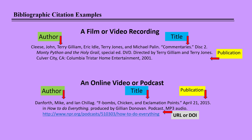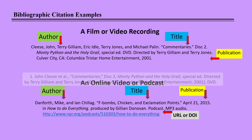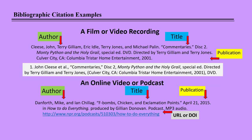You can list more authors in the bibliographic citation than in the footnote citation, so the rules are a little different. In the footnote citation, because there were more than three authors, the abbreviation et al. was used. In the bibliographic citation, you are allowed to list up to seven authors before using et al. Also notice that the DVD — or type of media — has moved from the end of the footnote citation to after the title and before the director in the bibliographic citation.